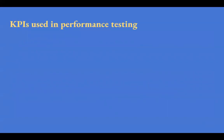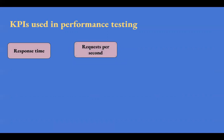KPI is used in performance testing. Let me tell you some parameters which are used as Key Performance Indicators in performance testing. First is response time — when you perform any action on a website, the request is sent to the server at the backend, and it measures how long it takes the system to process a request. Next is requests per second, which indicates how many requests can be handled by the server in a second. Then there are concurrent users — how many users can use the application simultaneously.